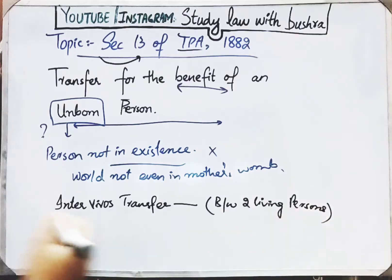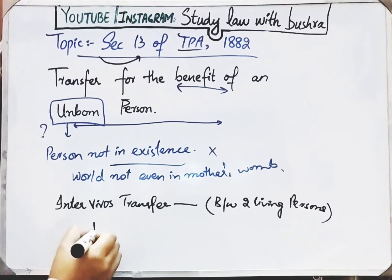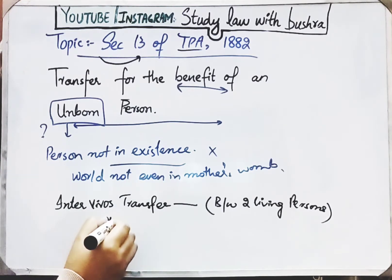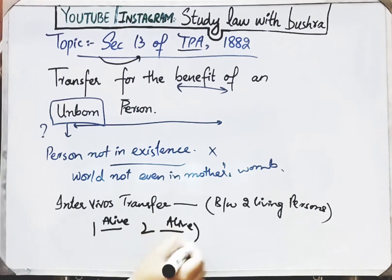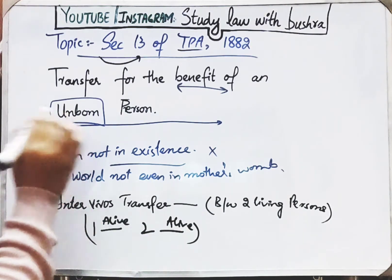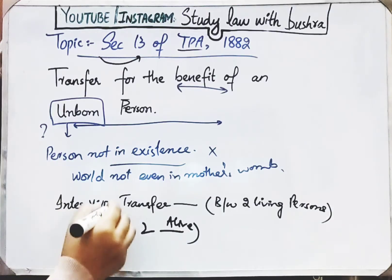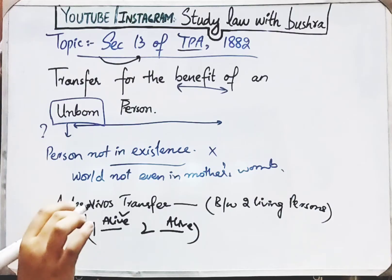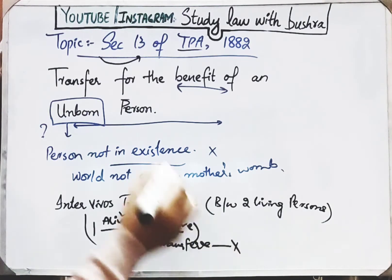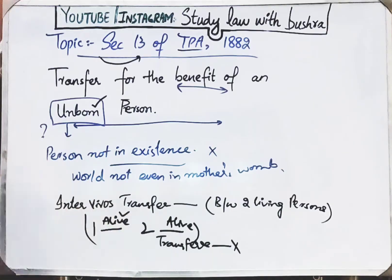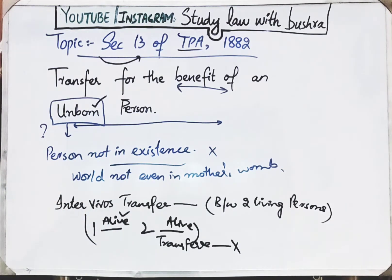The TPA talks about transfer between two living persons — the one transferring the property is also living, and the one to whom it is being transferred is also living. Both are alive, so you can transfer property. But in this case, the one making the transfer is alive but the one receiving has no existence — they are unborn. So how will you transfer property in that situation? Section 13 tells us this.